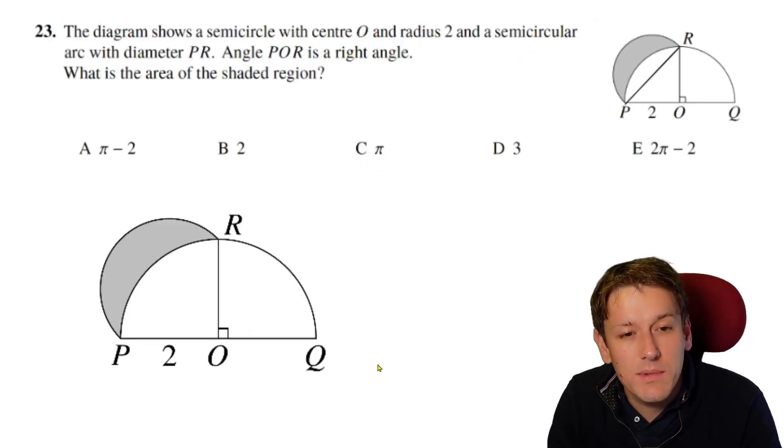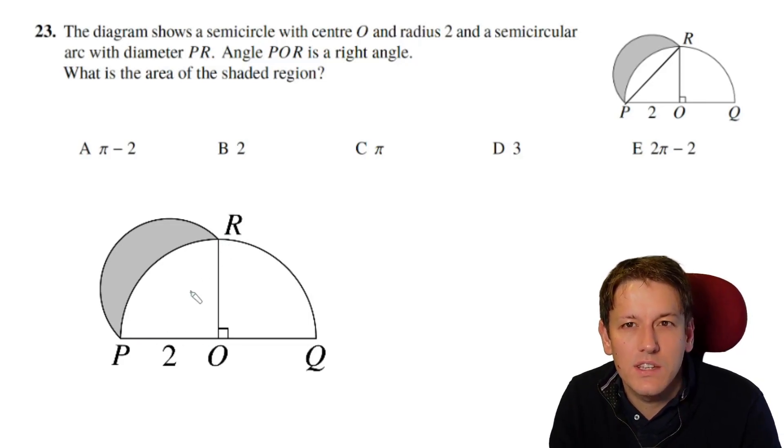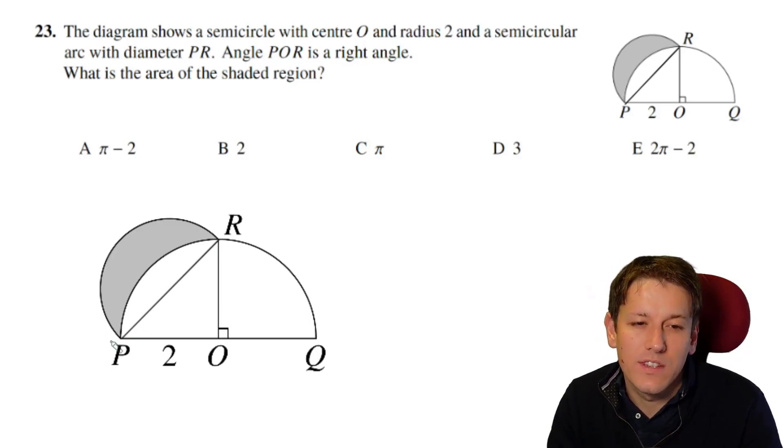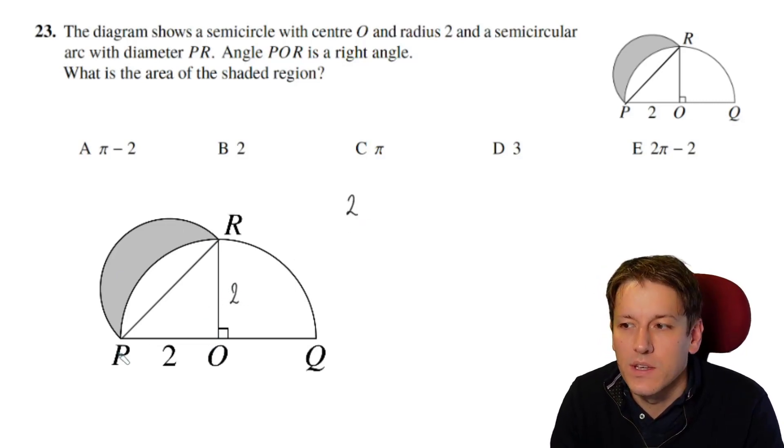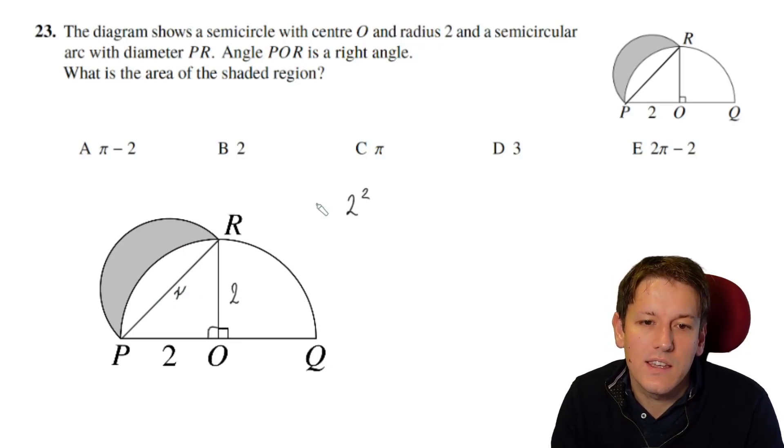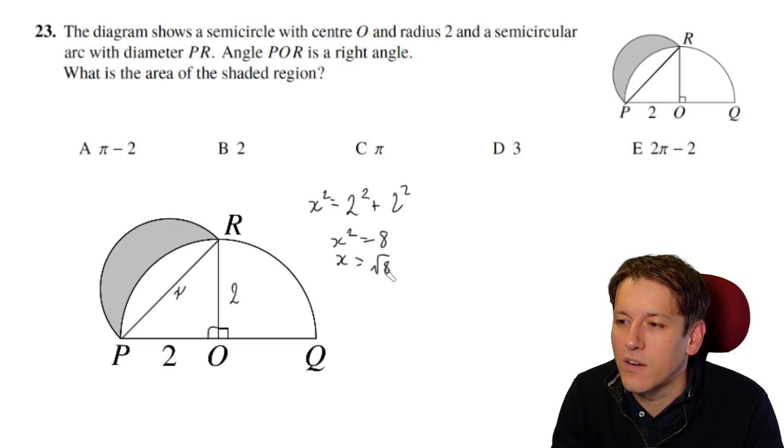So we've got a semicircle and another kind of semicircular arc here. So the first semicircle has radius 2. And so the first thing I'd want to do here is to put in this line so we can work out the radius of the semicircle that has the shaded part in it. So this is a radius here, this is also a radius, so that would be 2. And then you've got Pythagoras theorem on this right angle triangle here, which says that this x here would satisfy x squared equals 2 squared plus 2 squared. So x squared is equal to 8, or x is equal to the square root of 8.